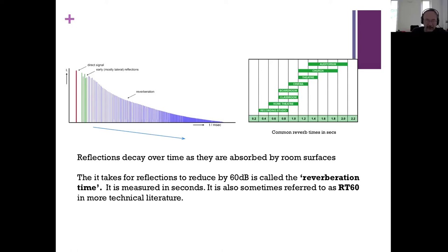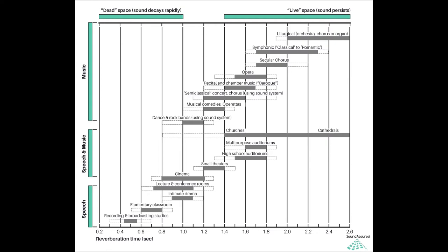That becomes your reverberation time, and the technical term for it is RT60 — the time it takes for the sound to decay by 60 decibels relative to the original impulse. This is the standard way reverberation time in a room is expressed.